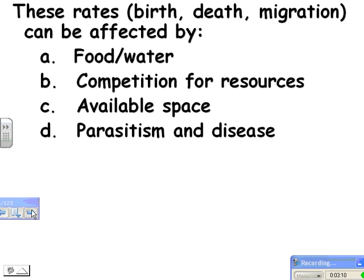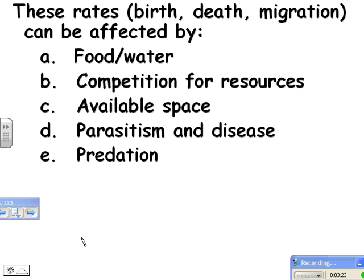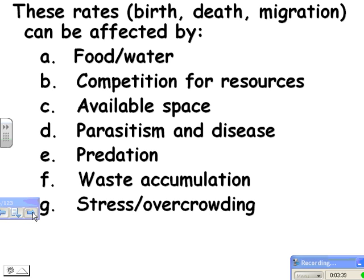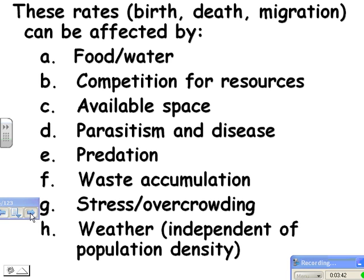You could have parasitism and disease — that's density dependent, which means if you have more organisms of the same species around, they're more likely to pass parasites and diseases to each other. And then predation — that's also a bit density dependent, because if you have lots of frogs in an area, you'll probably have more predators like muskrats there too. Waste accumulation: the more organisms you have, the more waste is produced, and you'd have more emigrating and fewer being born with more dying. Stress and overcrowding also tends to happen when you have too many organisms.